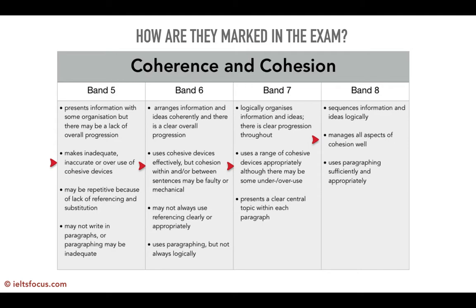In the exam, this is how they're marked. At band five: inadequate, inaccurate use, or they're overused. Band six: they're used well, but in some cases they could be faulty or seem mechanical, memorised. Band seven: they're used appropriately; there may be some overuse or slight mistakes, but it's not too serious. And band eight: you can see they're managed very well.